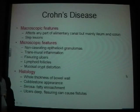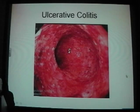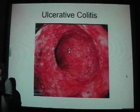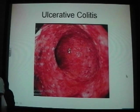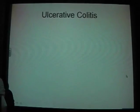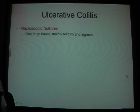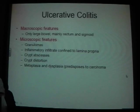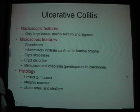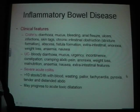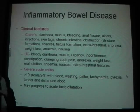Histologically, Crohn's affects the whole thickness of the bowel wall and has a cobblestone appearance. Ulcerative colitis affects mainly the mucosa, mainly rectum and sigmoid colon. Microscopic features of UC include granulomas and crypt abscesses. Histologically it is limited to the mucosa with smaller and more shallow ulcers. Clinical features of IBD include change of bowel habit, diarrhoea, mucus, bleeding, anal fissures, and ulcers, as well as extra-intestinal features.